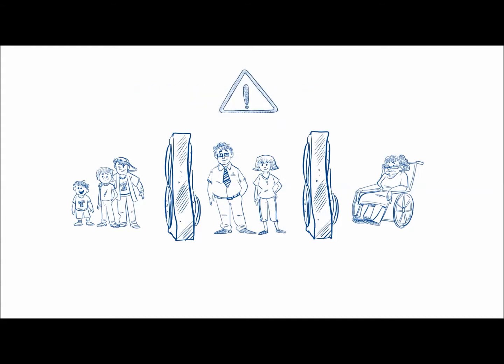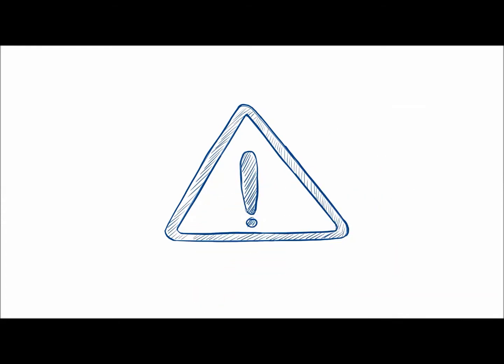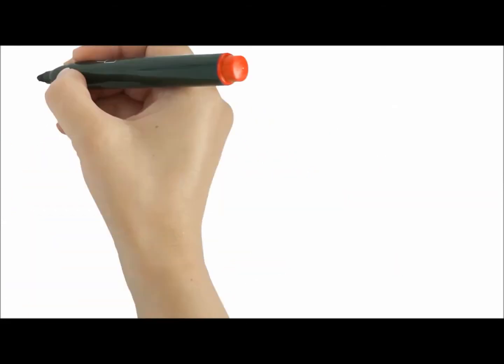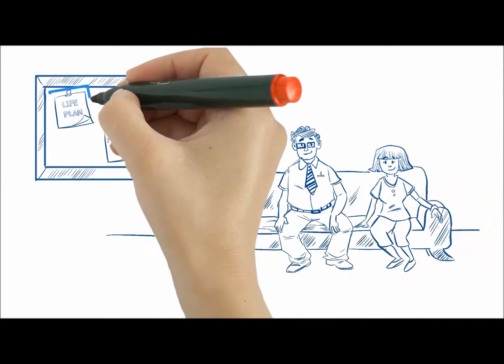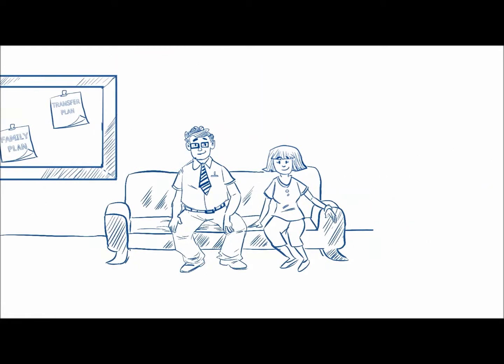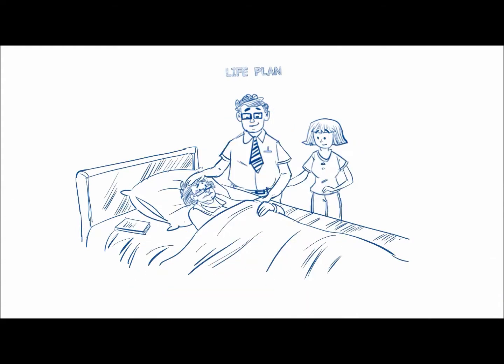If an emergency took place without proper planning, where would the children end up and what would happen to grandma? A proper estate plan can help Bob and Laura address incapacity by leaving a life plan to allow someone to take care of things in their absence.